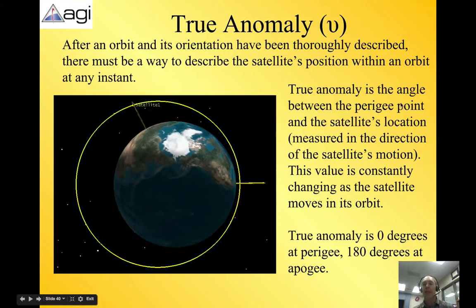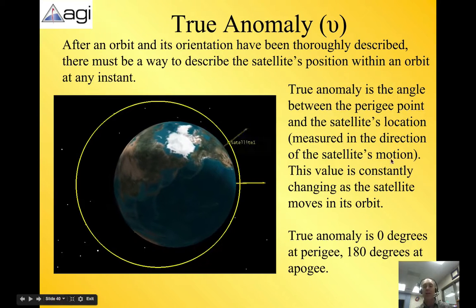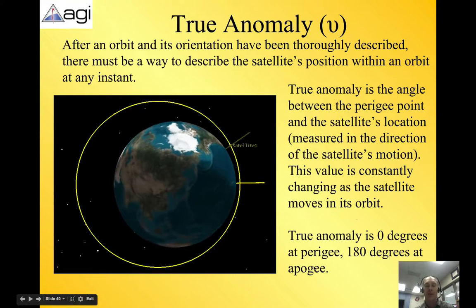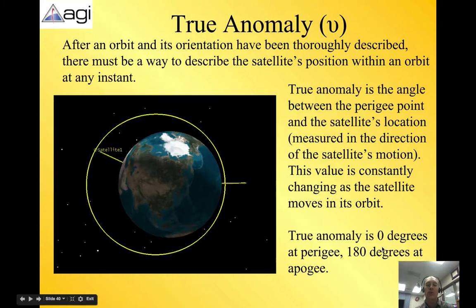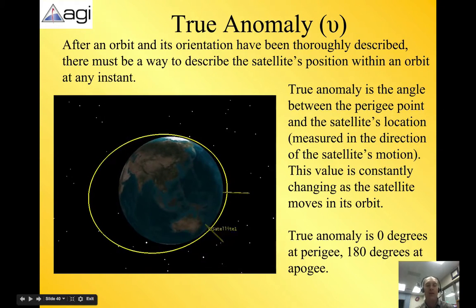So true anomaly, again, is the angle between the perigee point and the satellite's location, measured in the direction of the satellite's motion, and this value is constantly changing as the satellite moves in its orbit. True anomaly is zero degrees, so this gives you a value, zero degrees at perigee, and 180 degrees at apogee.